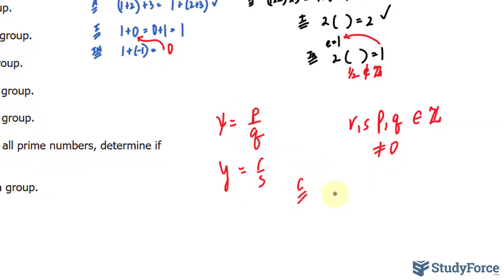Let's begin with closure. I'll multiply x times y and that should be an element of Q*. Let's find out if it is. p/q times r/s gives us pr/qs. Since they're all non-zero elements, this is also in Q*.